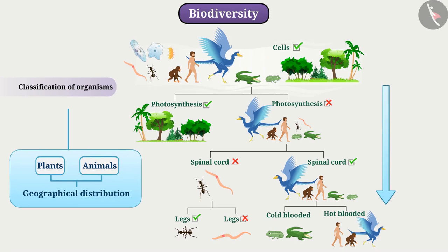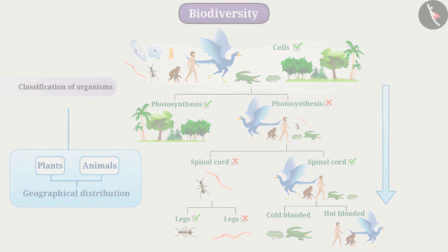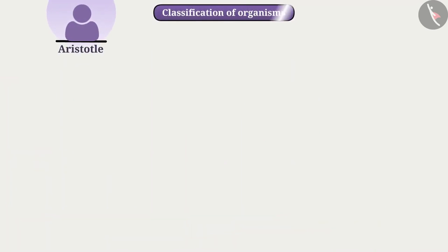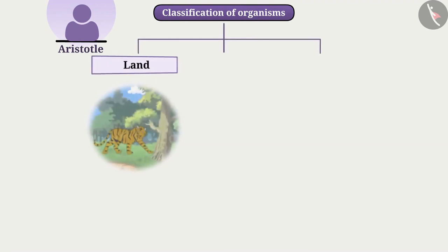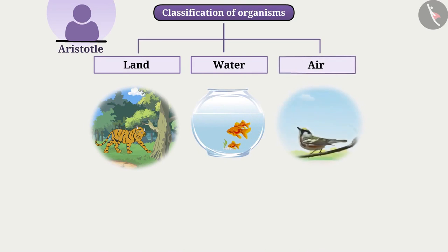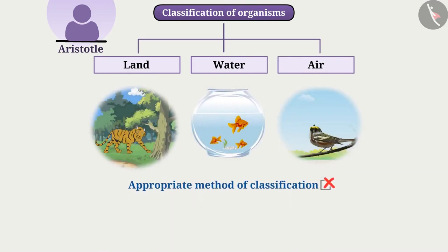Since ancient times, many attempts have been made to classify organisms. Aristotle classified organisms based on their habitat as land, water, air, etc. But this is not an appropriate method of classification.